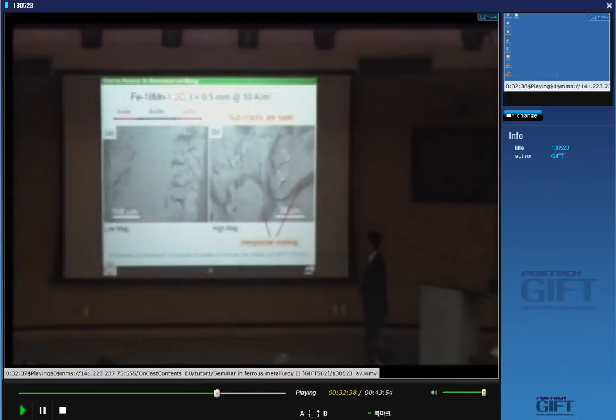Fractography. This is the thickness of the plate, the tensile sample. Center region, large ductile, but the outer region, you can see the brittle feature. Many sub-cracks are seen. In addition, clear intergranular fracture.